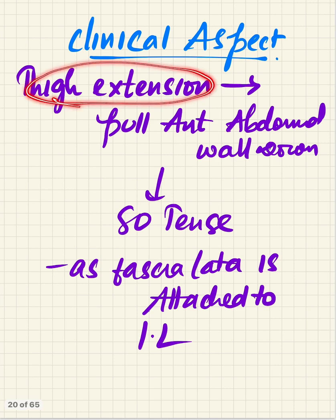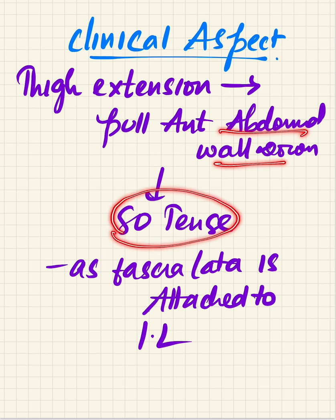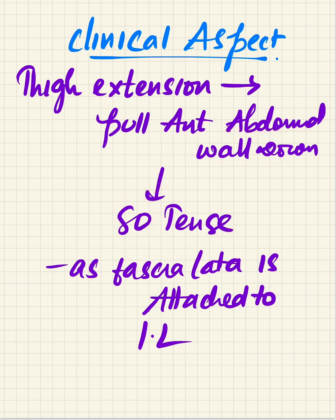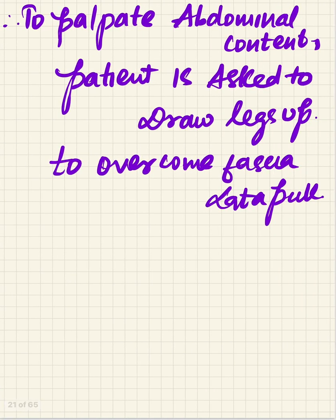For the clinical correlation: when the thigh is flexed, it pulls the anterior abdominal wall downwards because the fascia lata is superiorly attached to the inguinal ligament, making the saphenous opening tense. To relax the abdomen and palpate abdominal contents, we ask the patient to raise the leg upwards, which overcomes the pull of the fascia lata on the abdominal wall.